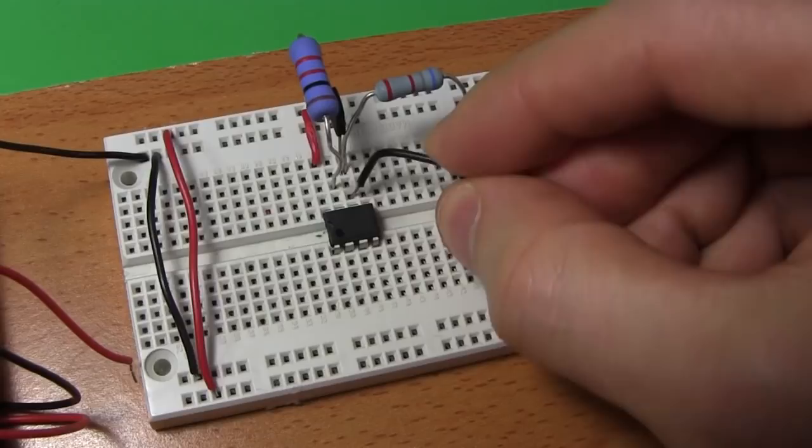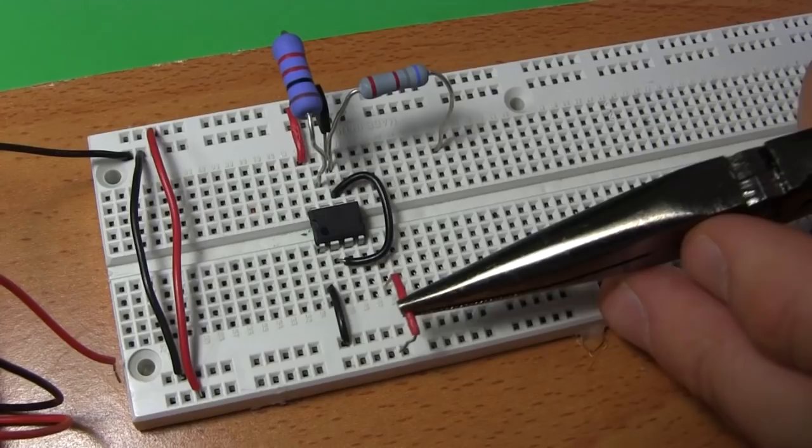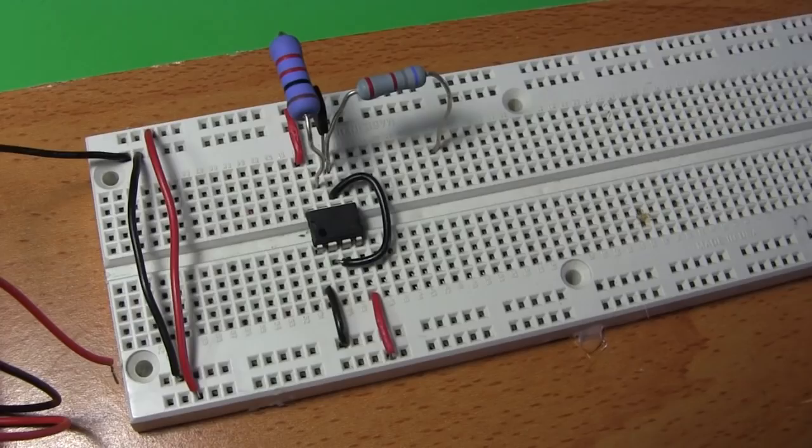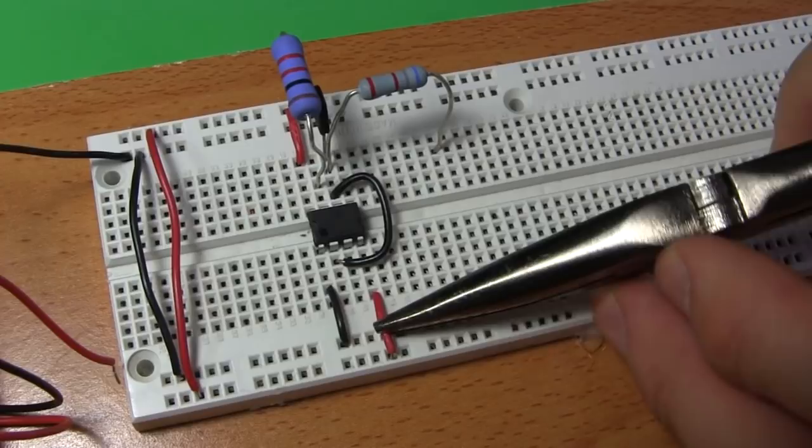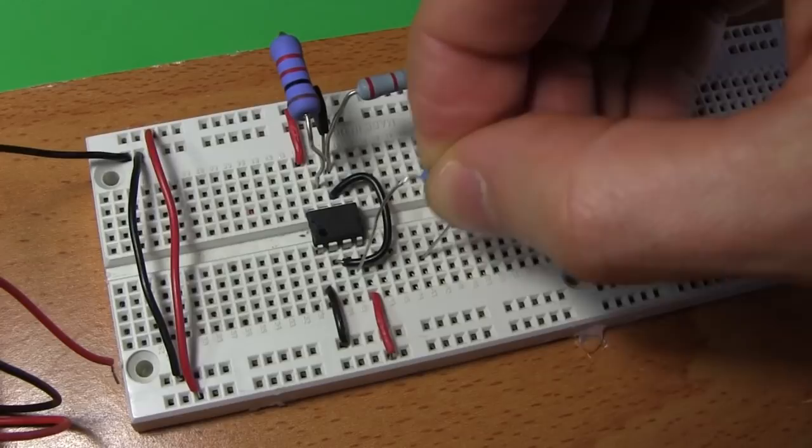Next plug one end of a wire into this hole and the other end in this hole. That connects pin six to pin two. Plug another wire between these holes. That connects pin one to battery negative. Plug a wire between these holes. That connects pin four to battery positive. Next plug the 51 ohm resistor in these holes, oriented either way. That connects one end to pin three.